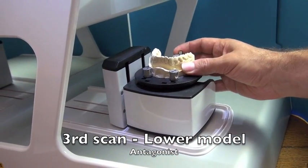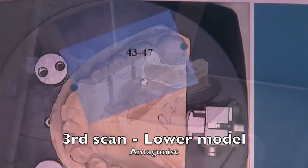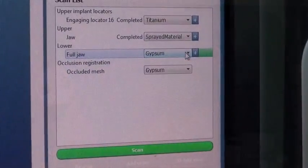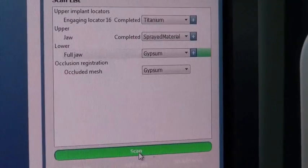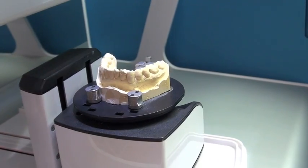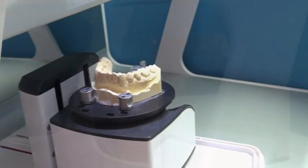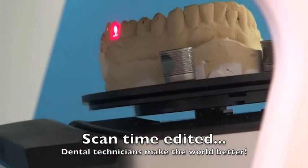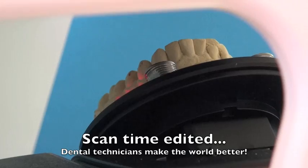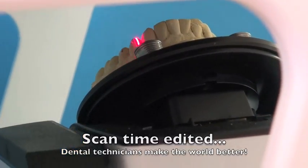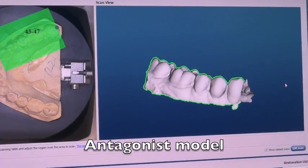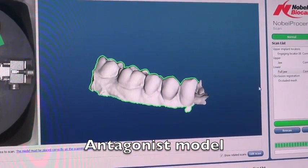During our third scan we're going to scan the lower model, which is the opposite model or the antagonist. We tell the computer where we want to scan, go in and pick gypsum, and then we push the scan button. It goes back in again and does the same exact thing, finds where the particular occlusal contacts are, scans it, and gets all the information that's needed. It's going to generate a model that the computer is going to see and be able to be in 3D.